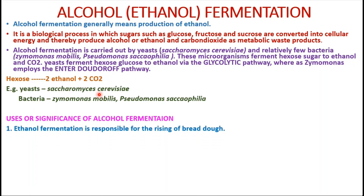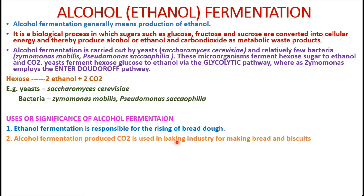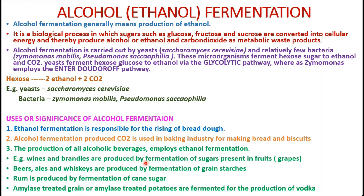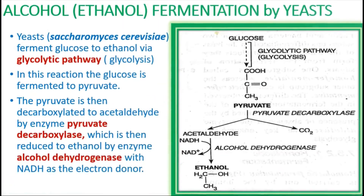Alcohol fermentation is responsible for the rising of bread dough. The fluffiness of bread is because of fermentation occurring in yeast cells, converting sugars present in the flour and releasing carbon dioxide, which makes the bread fluffy. The carbon dioxide byproduct is directly used in the baking industry for making bread and biscuits. Additionally, the production of alcoholic beverages like wine, beer, rum, and vodka also occurs because of ethanol fermentation.